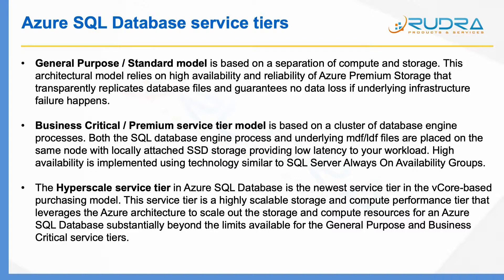In terms of high availability, it is implemented using technology similar to SQL Server Always On Availability Groups. When you compare general purpose or standard model with business critical or premium service type model, there is a difference in the underlying architecture. In general purpose, the SQL database engine is on a separate node from the storage, but in business critical or premium, both the database engine process and the database files are on the same node.